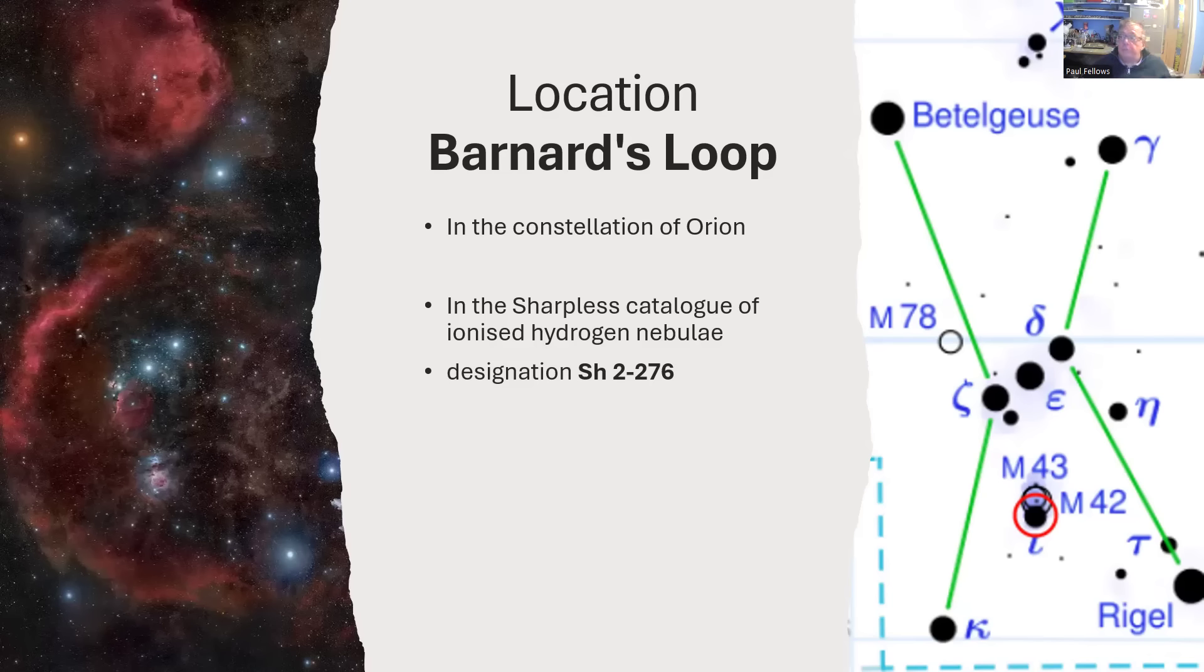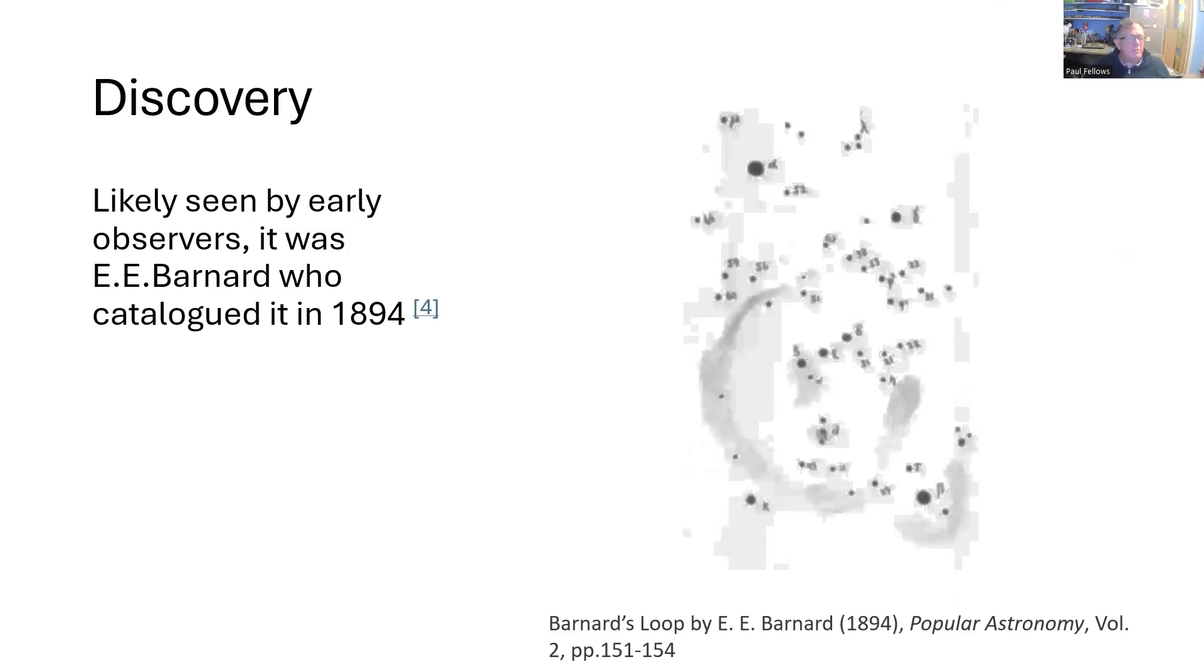Lovely picture. So first observed very early on actually by ancient observers, but it was E.E. Barnard who was the first to put it in a catalogue and hence it's called Barnard's Loop.